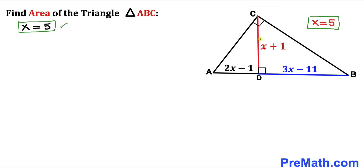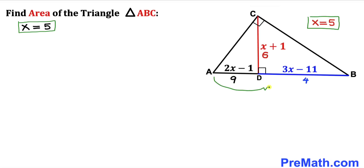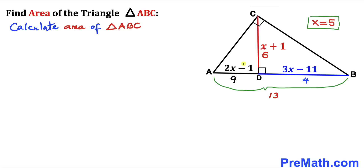Substituting x equals 5: CD equals x plus 1 equals 6; AD equals 2 times 5 minus 1 equals 9; BD equals 3 times 5 minus 11 equals 4. The full base AB equals AD plus BD equals 9 plus 4 equals 13.